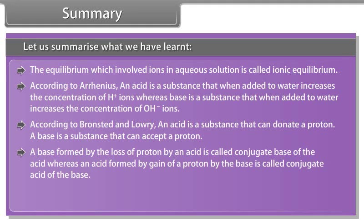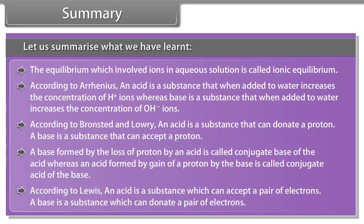A base formed by the loss of a proton by an acid is called the conjugate base of the acid, whereas an acid formed by gain of a proton by the base is called the conjugate acid of the base. According to Lewis, an acid is a substance which can accept a pair of electrons, and a base is a substance which can donate a pair of electrons.